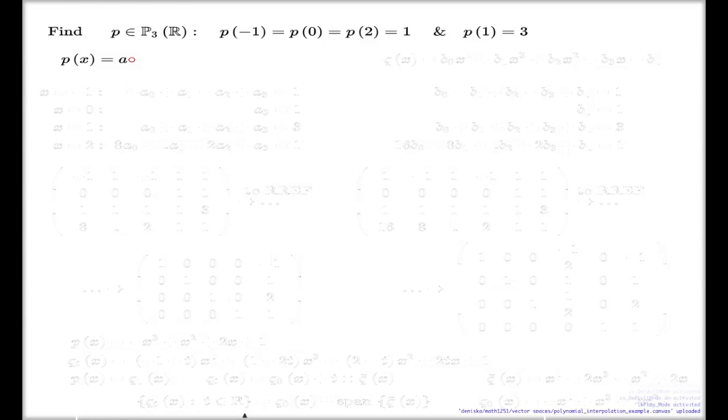You take your arbitrary polynomial of degree three with unknown coefficients: a₀x³ + a₁x² + a₂x + a₃, like this.